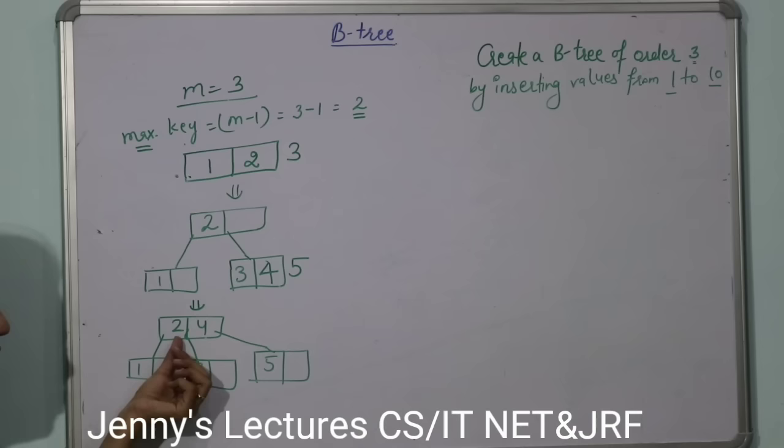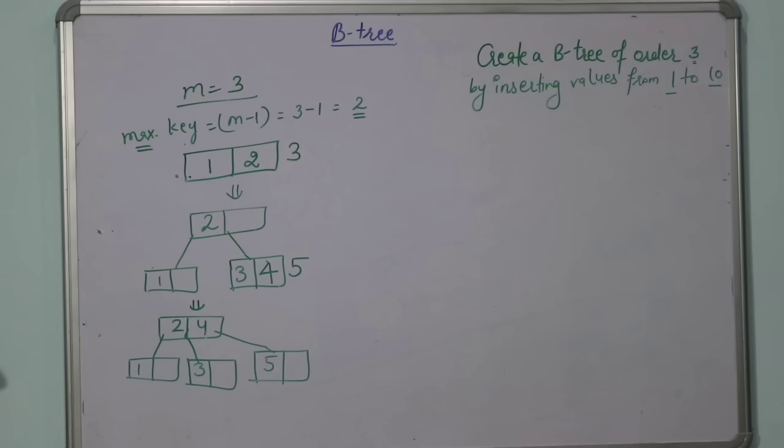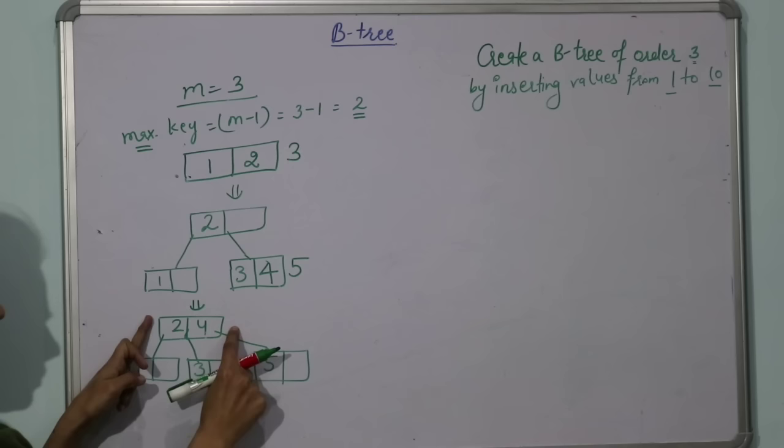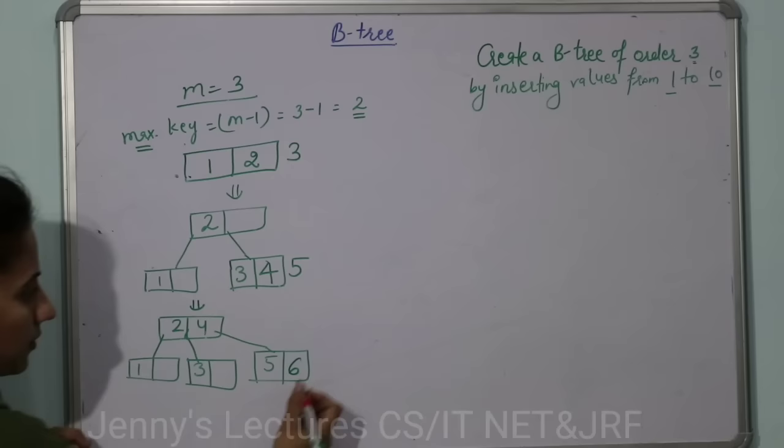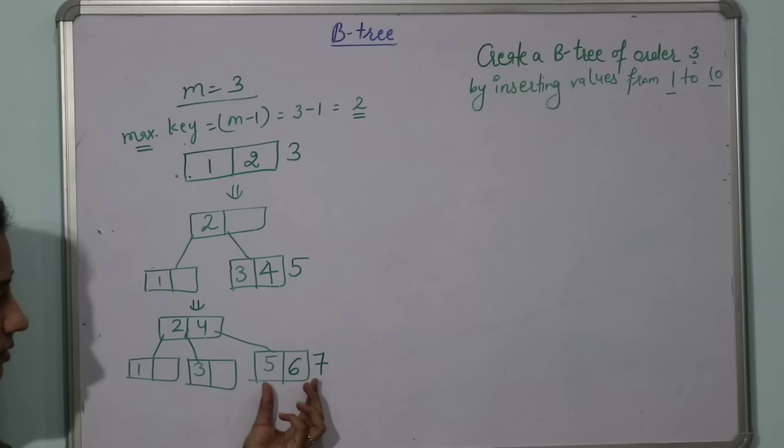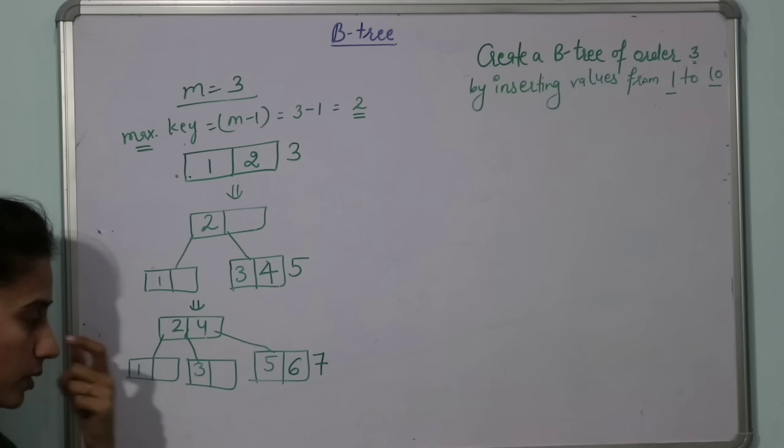Next we have to insert 6. Here we have a leaf node, one position is vacant, so 6 will be inserted here. After that, 7. 7 should be inserted here, but we cannot insert it here because maximum keys can be 2. Now again this node would be split.